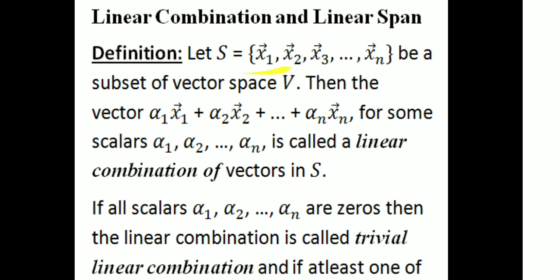Definition: Let S = {x₁, x₂, ..., xₙ} be a subset of a vector space V. Then the vector α₁x₁ + α₂x₂ + ... + αₙxₙ, for some scalars α₁, α₂, ..., αₙ, is called a linear combination of vectors in S. We have one set S which is a subset of a vector space V, and we form a linear combination of its vectors. That's the most important thing.